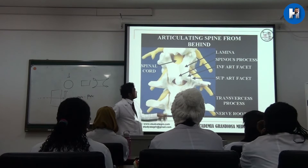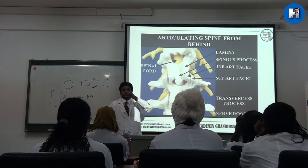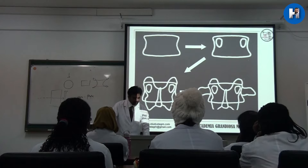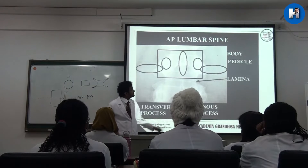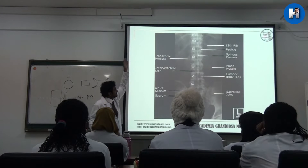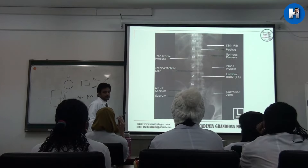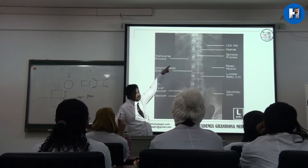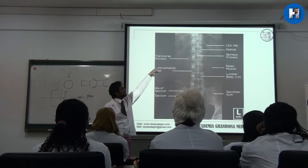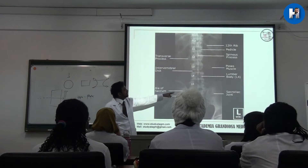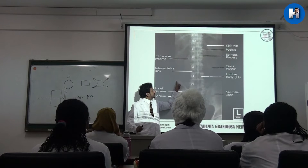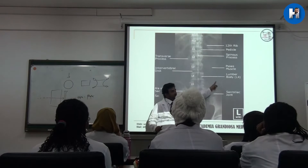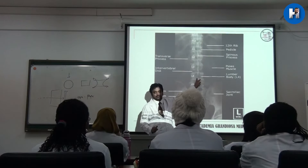In between two vertebrae they have the intervertebral disc. Now in the AP projection you can see the lower part — you can find T12, then L1, L2, L3, L4, L5. When you connect these two lines we call it Tuffier's line, and it connects at L4.